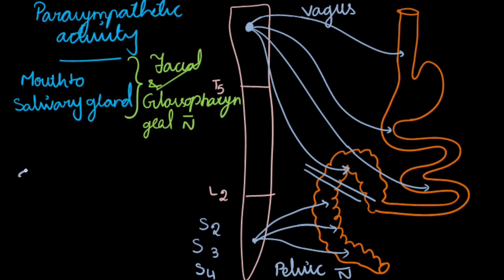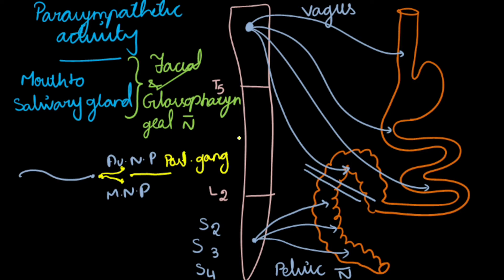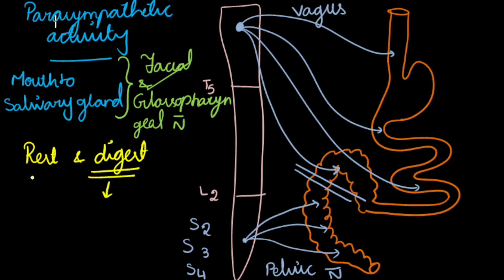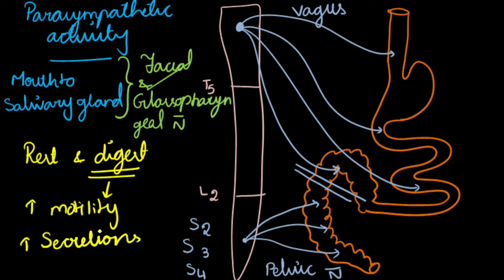These preganglionic fibers end in Auerbach's nerve plexus and Meissner's nerve plexus present in the wall of the GIT, where they synapse and form the postganglionic nerve fibers. So in sympathetic we have separate ganglia such as celiac, inferior mesenteric, and superior mesenteric, but in parasympathetic activity the ganglion is formed only when the nerve fibers synapse with the local nerve plexuses. The functions of the parasympathetic activity are the opposite of sympathetic — mainly during rest it helps digestion by increasing GIT motility and increasing secretions and absorptions.